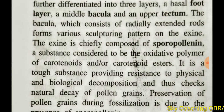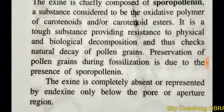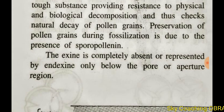Sporopollenin is the best substance to protect the pollen from degradation, and thus aids in the preservation of pollen grains during fossilization. If the pollen grain is fossilized, it is preserved due to sporopollenin. The exine is completely absent or represented by intine only below the pore or aperture. Where the pollen tube germinates, the exine is completely absent in that area.